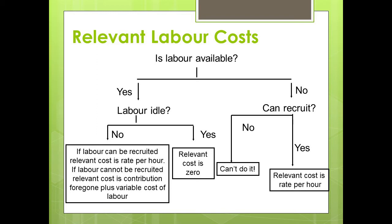If not idle and there's no spare capacity, we have two options. One: we pay overtime — whatever overtime rate is paid, that is the relevant cost. Or we bring in an agency worker and pay them. The third option: if workers are already working eight hours a day, we divert them from one job to this new job. We pay them the same, but because we're losing output elsewhere, the opportunity cost — contribution foregone — comes up as well.